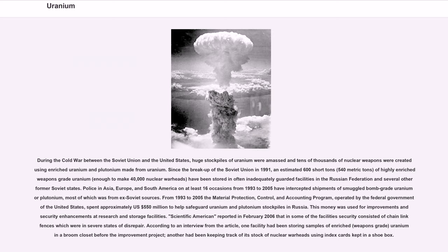Since the breakup of the Soviet Union in 1991, an estimated 600 short tons (540 metric tons) of highly enriched weapons-grade uranium, enough to make 40,000 nuclear warheads, have been stored in often inadequately guarded facilities in the Russian Federation and several other former Soviet states. Police in Asia, Europe, and South America on at least 16 occasions from 1993 to 2005 have intercepted shipments of smuggled bomb-grade uranium or plutonium, most of which was from ex-Soviet sources. From 1993 to 2005, the Material Protection, Control, and Accounting Program, operated by the federal government of the United States, spent approximately U.S. $550 million to help safeguard uranium and plutonium stockpiles in Russia. This money was used for improvements and security enhancements at research and storage facilities. Scientific American reported in February 2006 that in some of the facilities security consisted of chain-link fences which were in severe states of disrepair. According to an interview from the article, one facility had been storing samples of enriched, weapons-grade uranium in a broom closet before the improvement project; another had been keeping track of its stock of nuclear warheads using index cards kept in a shoebox.